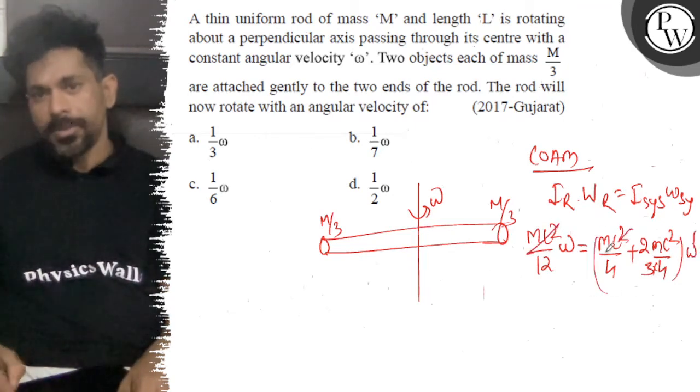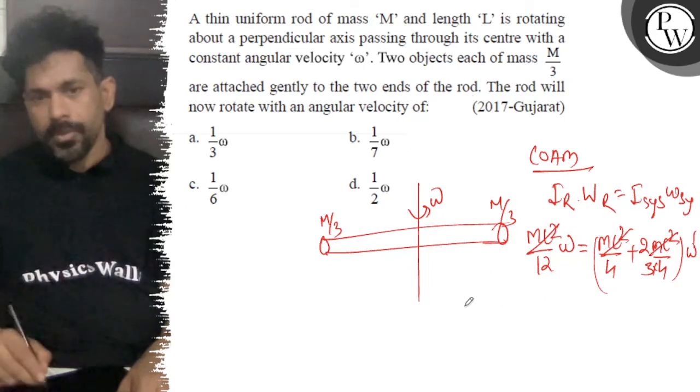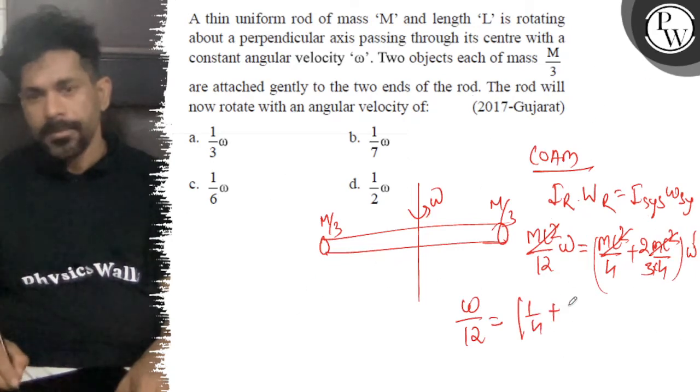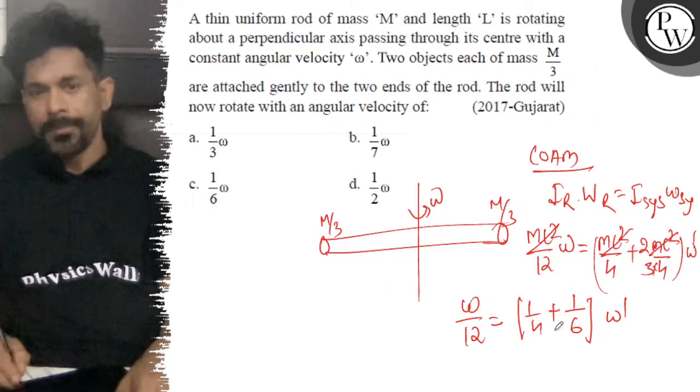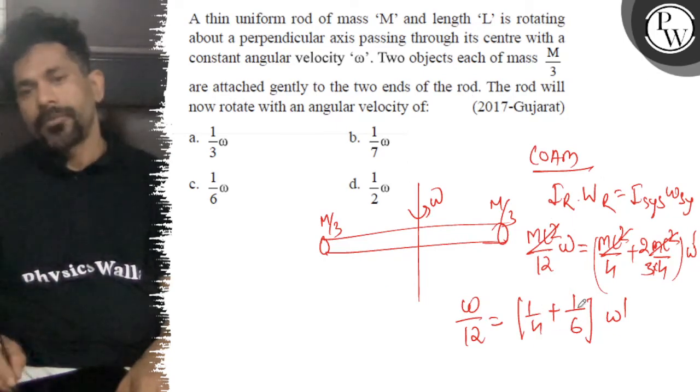So mL square by mL square, this is how omega by 12 is equal to 1 by 4 plus 1 by 6 omega dash. So if we multiply, 2 is equal to 5.